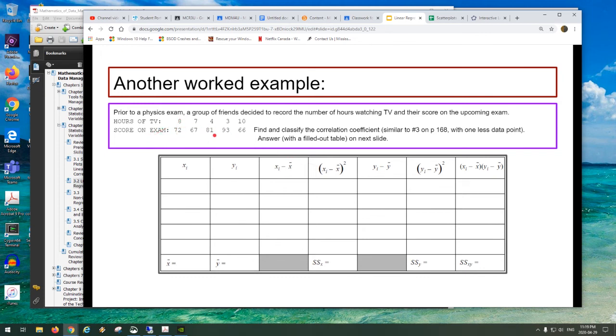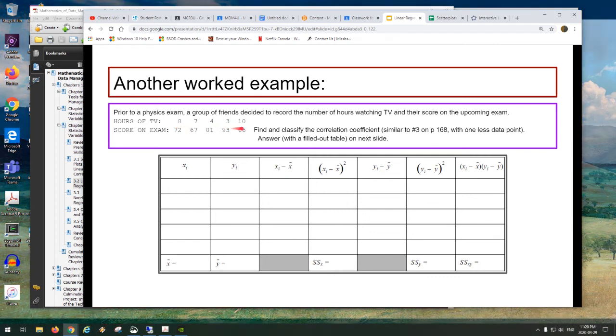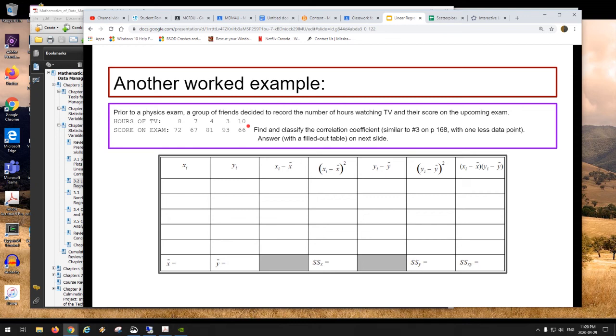We have hours of TV. This is a worked example that I decided to do. This is actually from question number three on page 168. Prior to a physics exam, a group of friends decided to record a number of hours watching TV and their score on the upcoming exam. Here we have hours of TV: 8, 7, 4, 3, and 10. Because this is time, if you were graphing this, it would go on the x-axis. But for this example, we're not really putting anything on a graph. We're just going to compute the correlation. How well does watching TV correlate with your marks on a physics exam? We're being asked to find and classify the correlation coefficient.